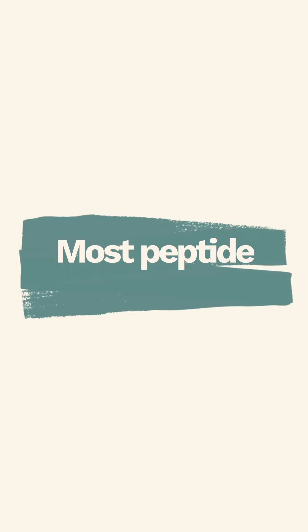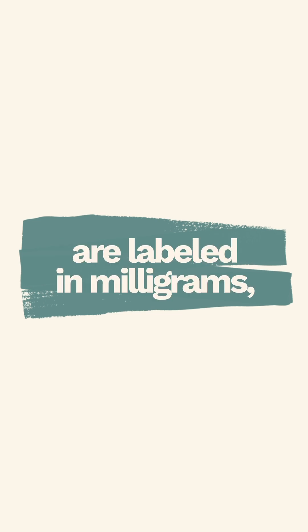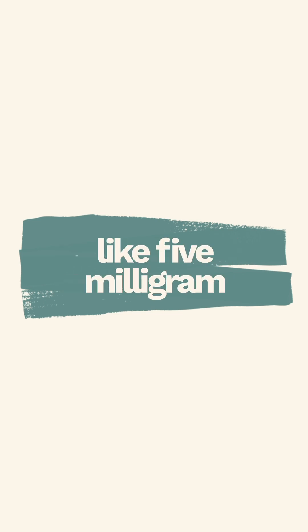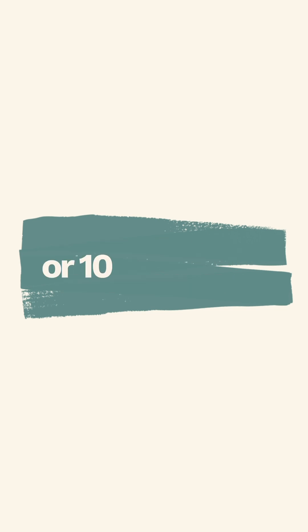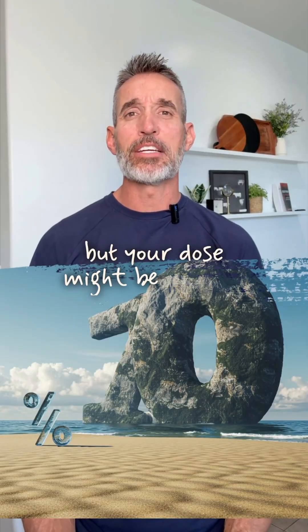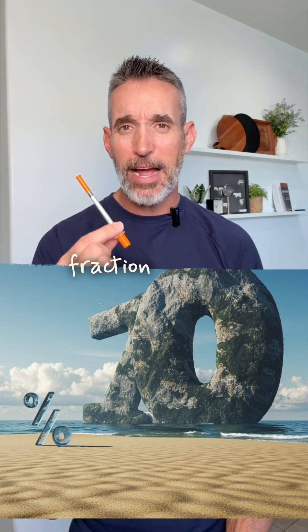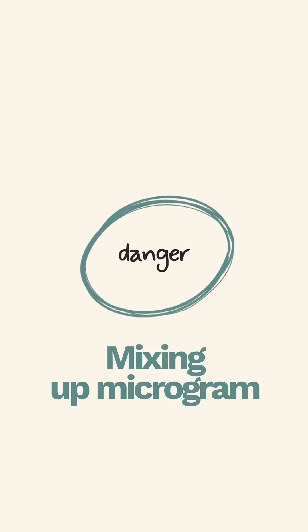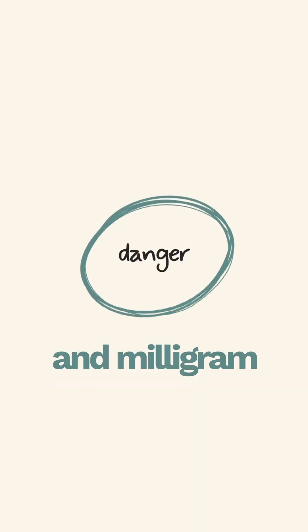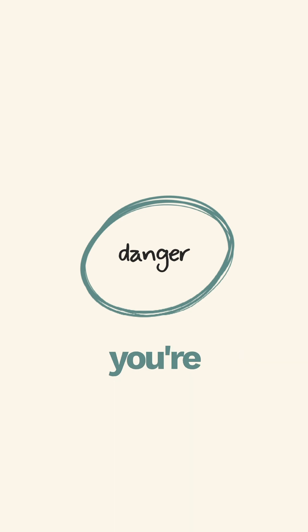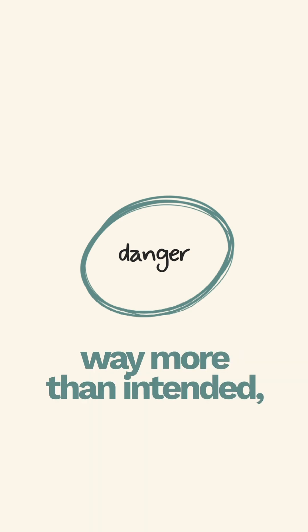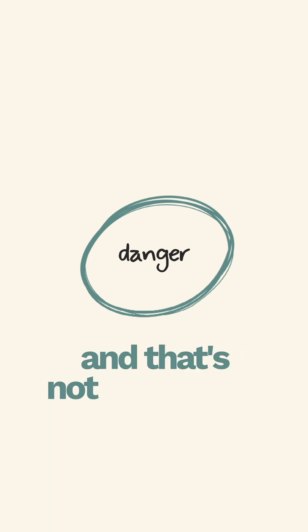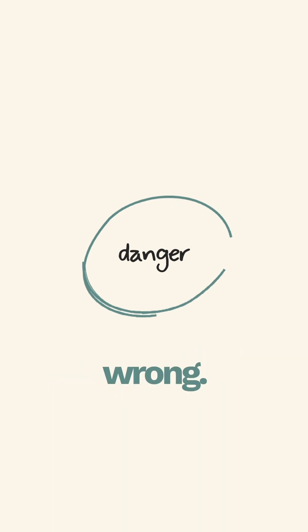Most peptide vials are labeled in milligrams, like 5 milligram or 10 milligram, but your dose might be a small fraction of that. Mixing up micrograms and milligrams means you're taking way more than intended, and that's not something you want to get wrong.